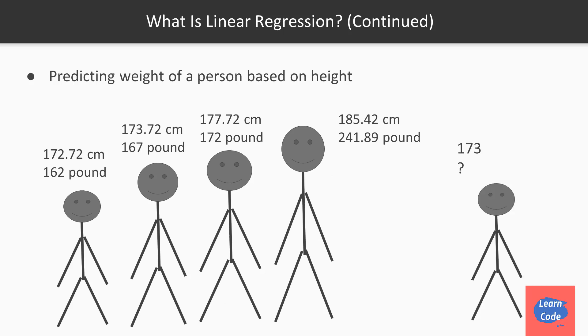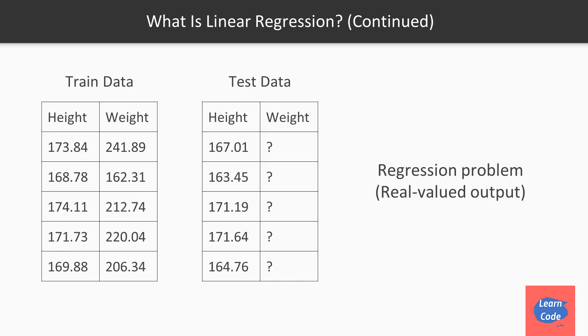Now if there is a new person introduced into the class and you want to predict this person's weight, you can assume that his weight will be somewhere close to 174 and you can predict the weight somewhere close to this number. So the first set of data which has the weight values is called the training data set which has the height and the corresponding weight.